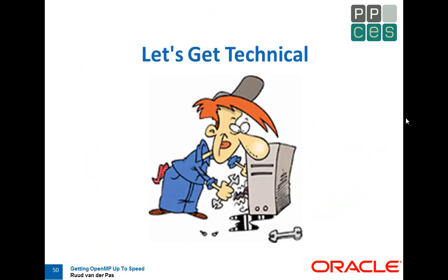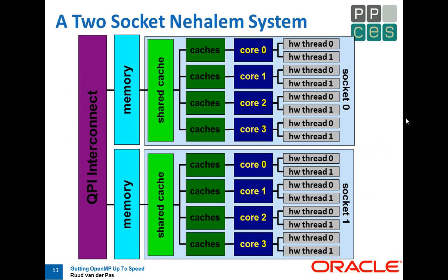To understand why, we need to look at the architecture. This was a machine with two sockets, each with four cores. Each core supports two hardware threads. It's a CC NUMA system because each socket has a portion of the memory, and the Intel interconnect is called QPI — Quick Path Interconnect — a cache-coherent interconnect. I ignored that when I wrote my OpenMP.